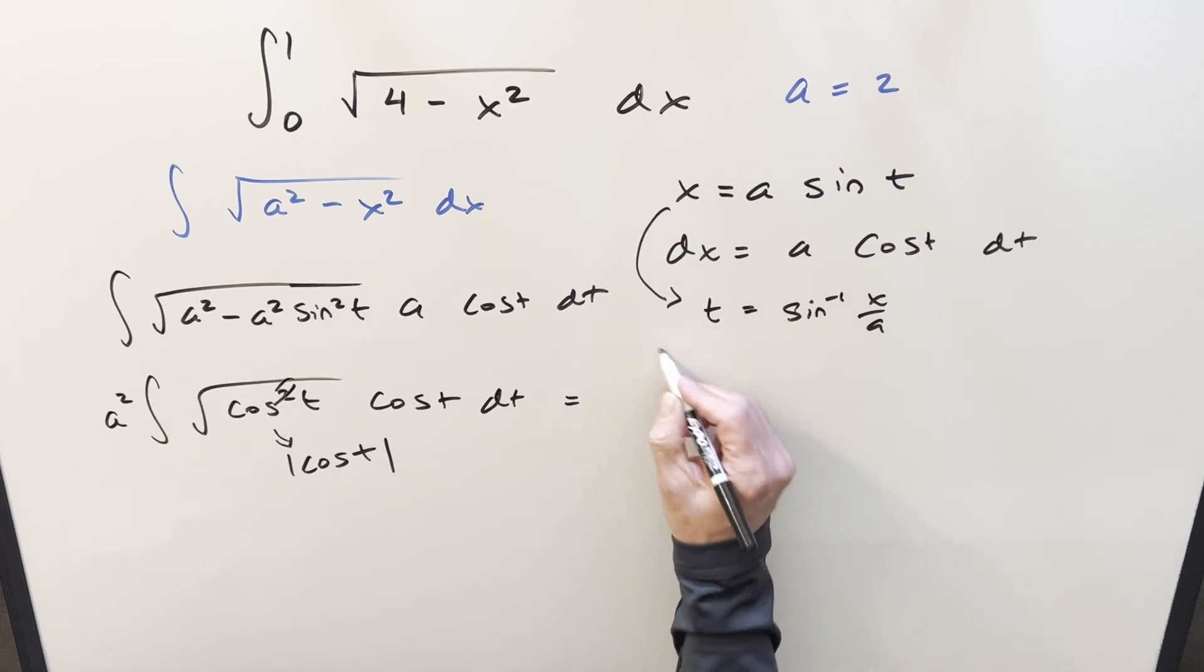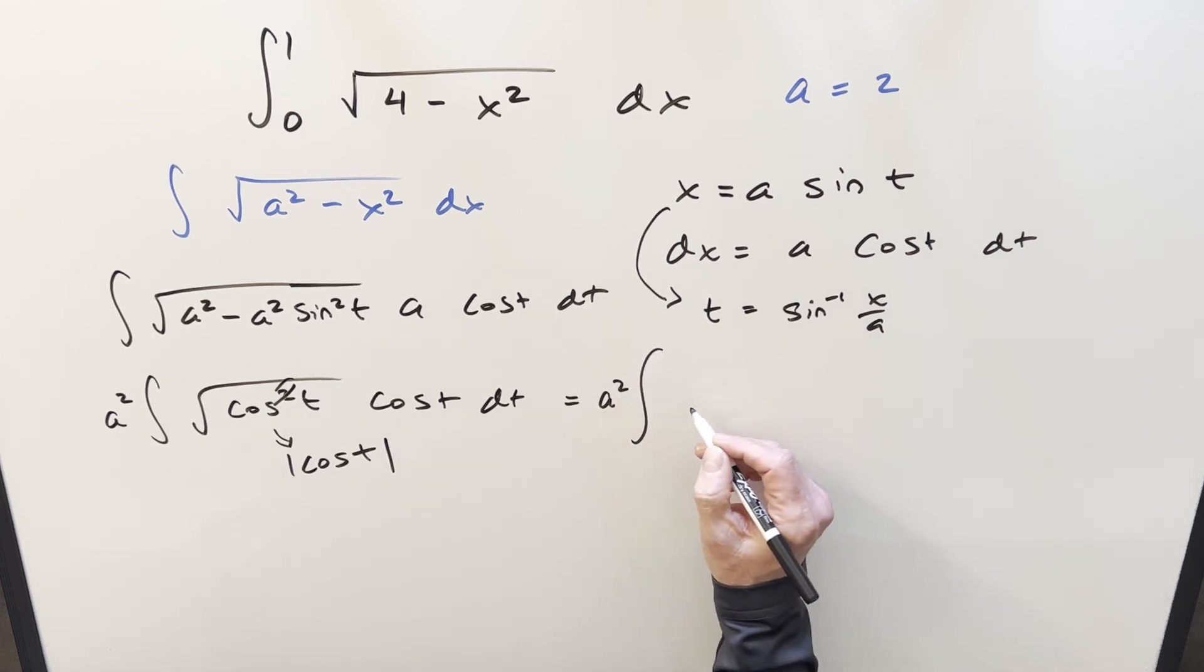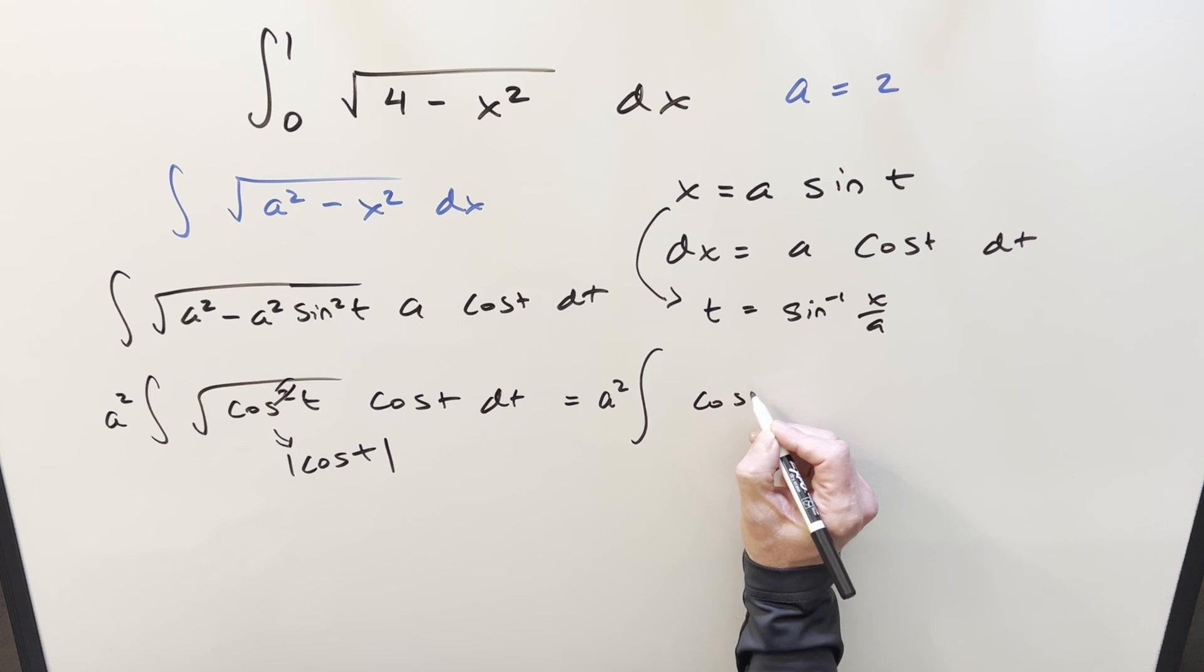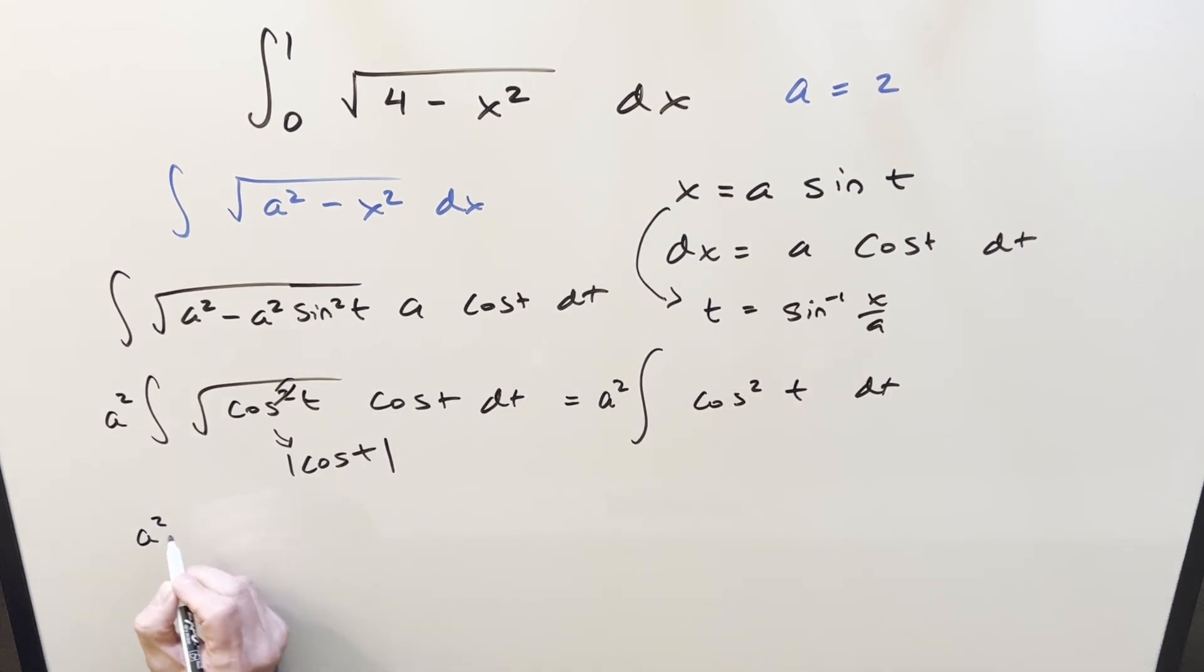So what's going to happen, simplifying it, we've got our a squared, and then we're just integrating cosine squared t dt. But then we can reduce the power on this thing here. We're going to have one half one plus cosine two t, which we can integrate really quick. But I can bring this half out front like this,